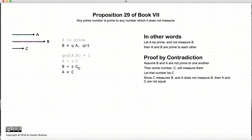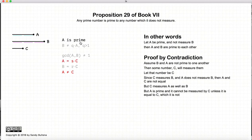Now since C measures B, and we know that A does not measure B, then we know that A does not equal C. Now, C measures A, and it also measures B. But A is prime, and A is not equal to C.